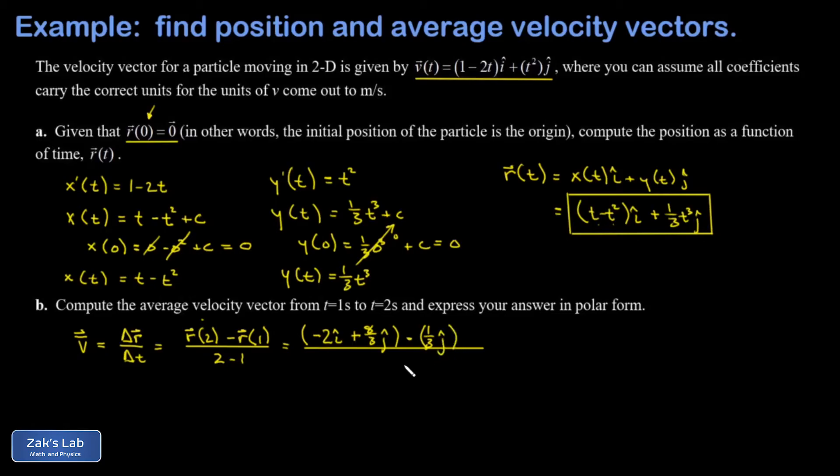And then the denominator of course is just one. So I get an average velocity vector of negative two i hat plus seven thirds j hat. So there it is in component form, but I want to get the polar form for this.